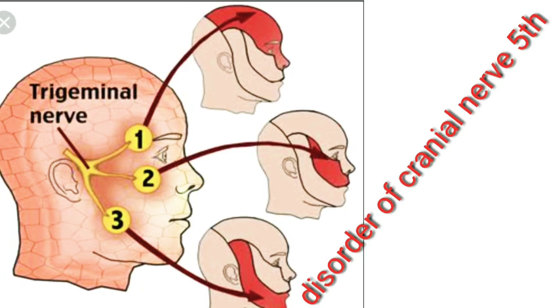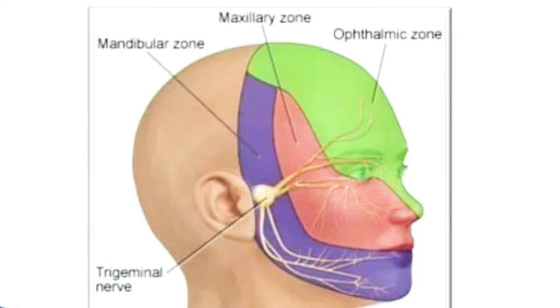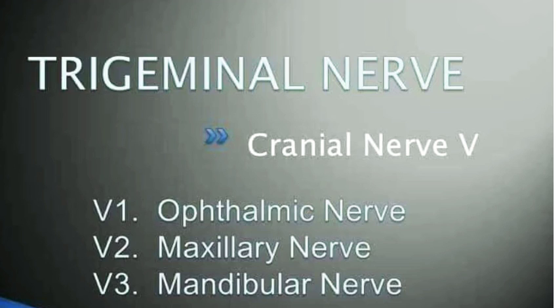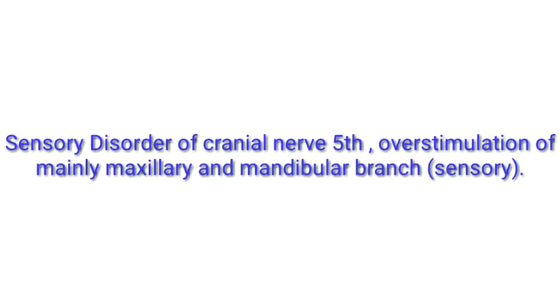Welcome to nursing tricks — basics are the basics and you can't beat the basics. Today we discuss trigeminal neuralgia, a disorder of cranial nerve five. Cranial nerve five has three divisions: the ophthalmic nerve, the maxillary nerve, and the mandibular nerve. Trigeminal neuralgia involves overstimulation of the maxillary and mandibular branches, while the sensory-motor branch of the mandibular remains intact.